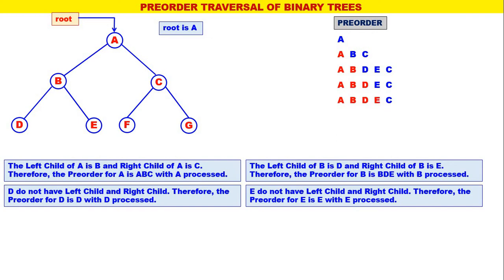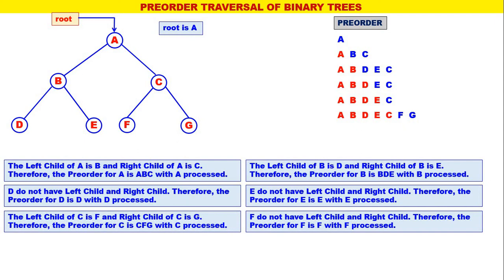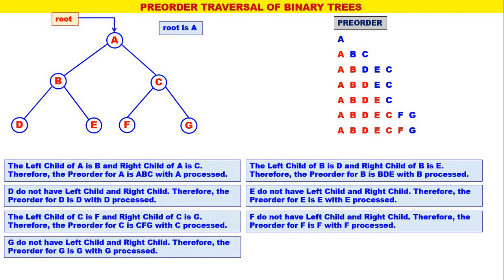Now the leftmost is c. The left child of c is f and the right child of c is g, therefore the pre-order for c is c, f, g with c processed. c is replaced by c, f, g. Now the leftmost is f — f does not have left or right child, therefore the pre-order for f is f only, with f processed. Next the leftmost is g — g does not have left or right child, therefore the pre-order for g is g only, with g processed. Now all the nodes have become red, meaning all the nodes are traversed. Therefore the pre-order traversal for this binary tree is a, b, d, e, c, f, g.